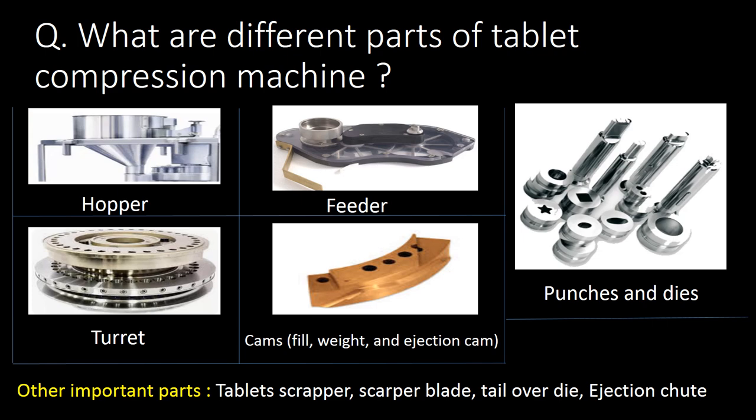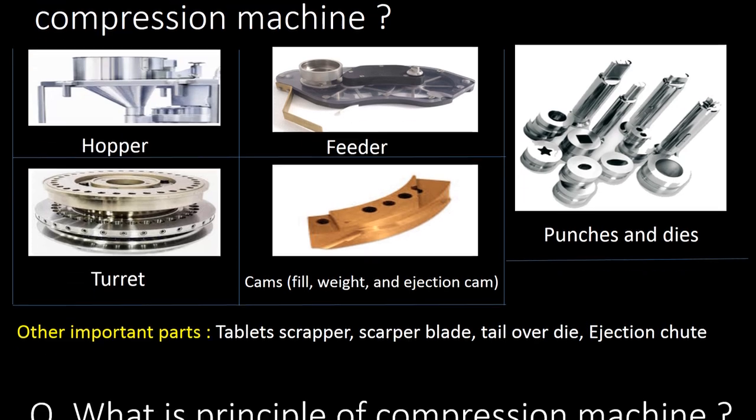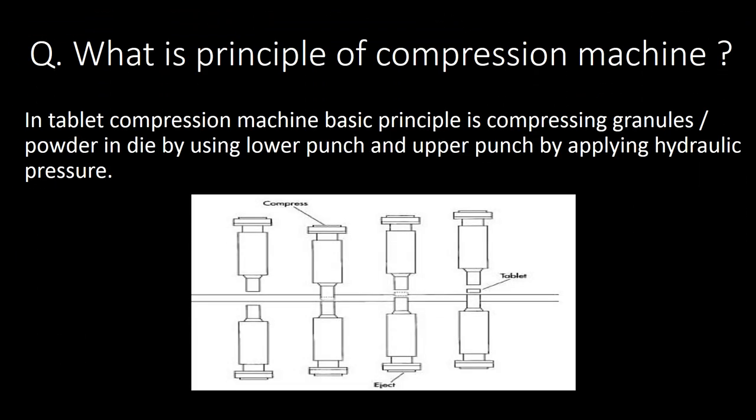What are the different parts of a tablet compression machine? Important parts of a tablet compression machine are: hopper, feeder, turret, different types of cams (fill cam, weight cam, and ejection cam), and punches and dies. Other important parts are tablet scraper, scraper blade, tailor die, and ejection chute.